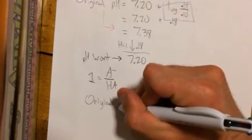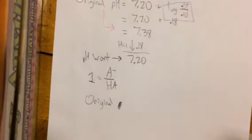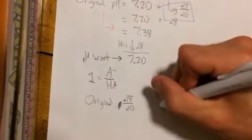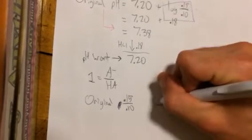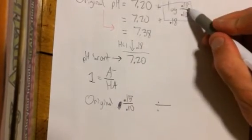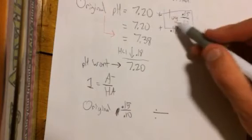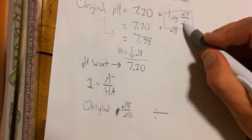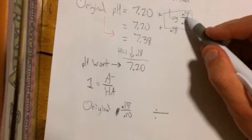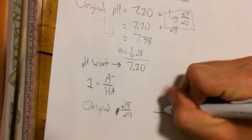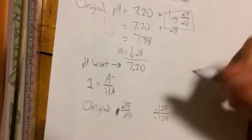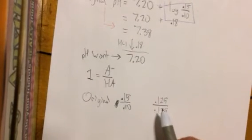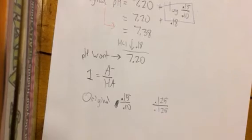Original A minus over HA is 0.15 over 0.10. And then to make this section equal to 0, we have to make these numbers divided by each other equal to 1. So we have to make this the same number. So I calculated it out, and if we make those numbers 0.125 each, then we are in business and this will be equal to 0 and 7.20 will be the remaining pH.